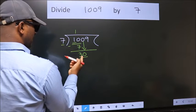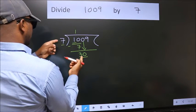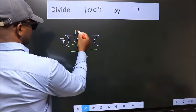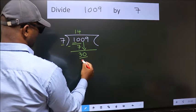So 30. A number close to 30 in 7 table is 7 fourths, 28.